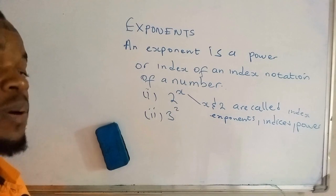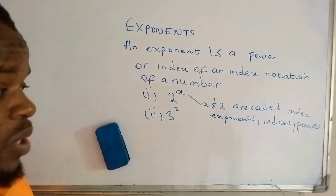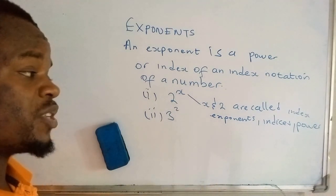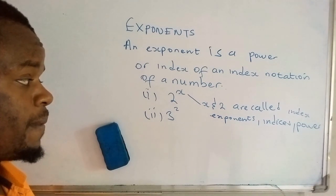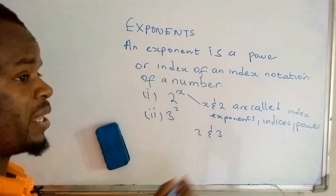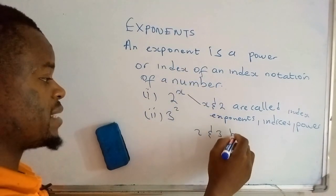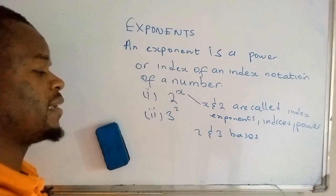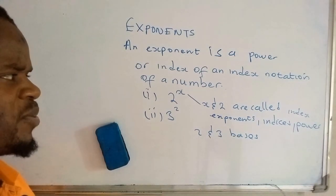We can as well call it an exponent, or we can also call it a power. Okay, so now x and 2 are powers. They can as well be called indices. We may as well call them powers. Then 2 and 3 that are raised to these powers are called bases.